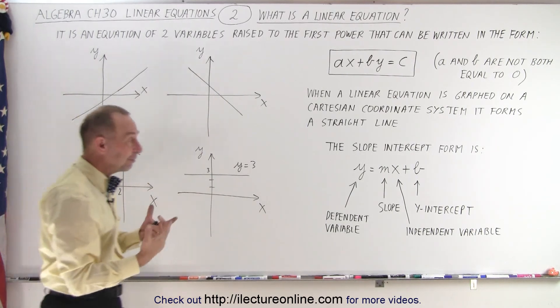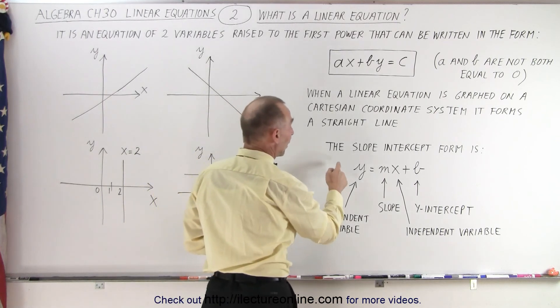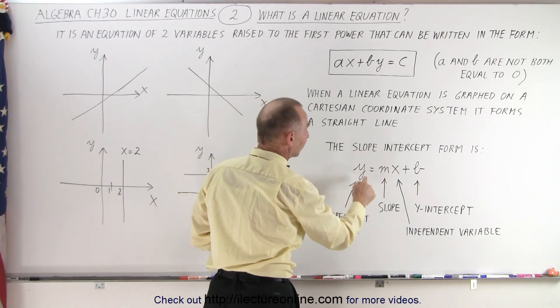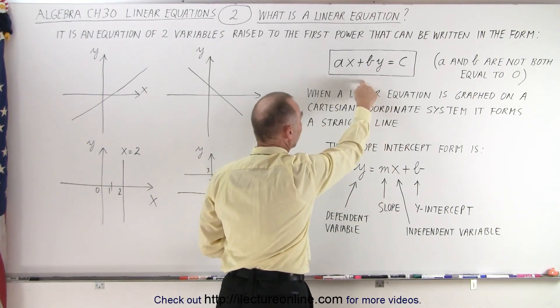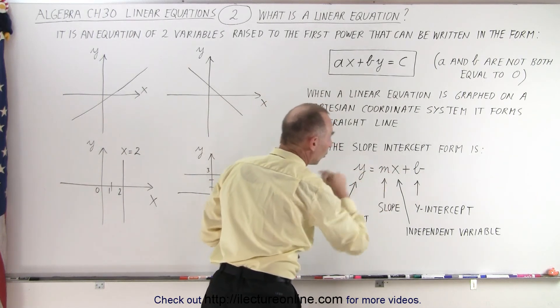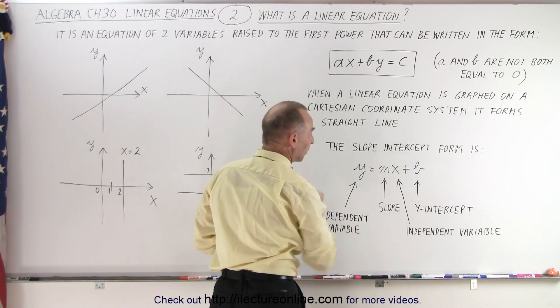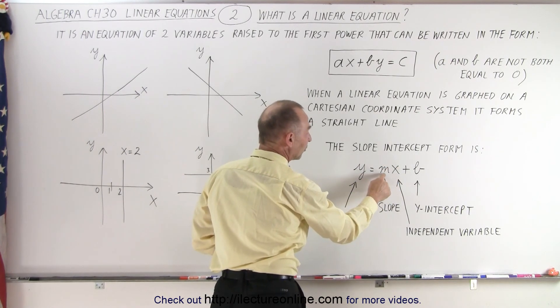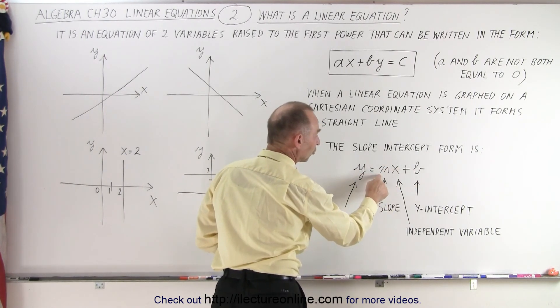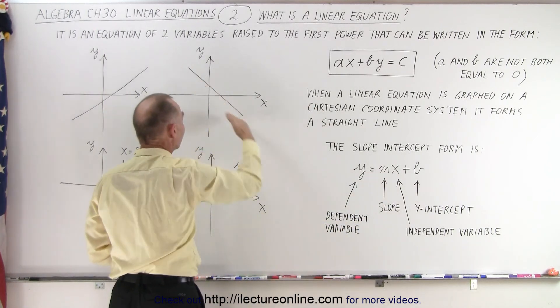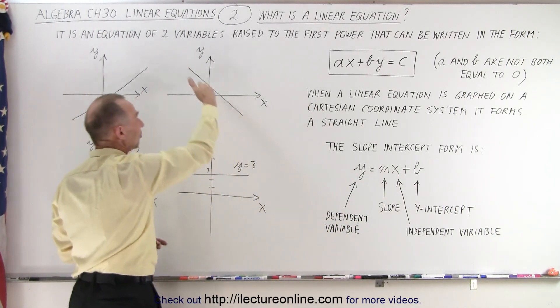Notice we have different forms of that equation. We can also write it in what we call the slope intercept form. So this equation can be transformed into this form, and then notice we have the two variables again, x and y, they're raised to the first power. Then we have those two constants m and b.